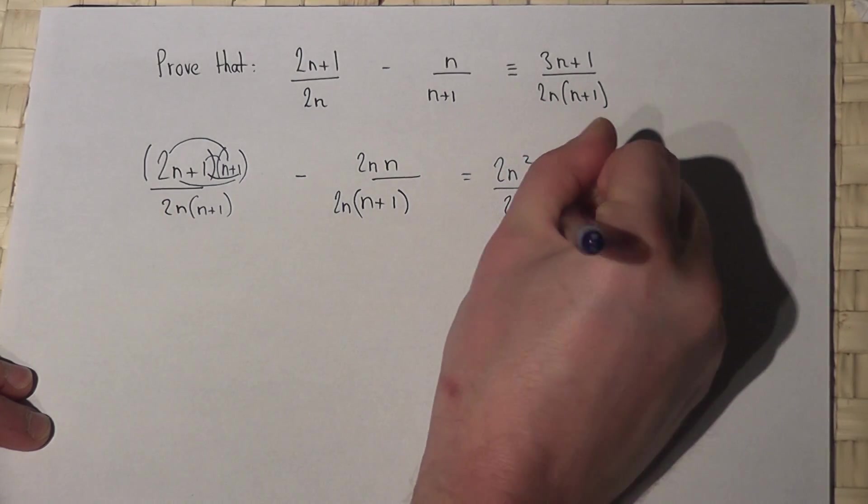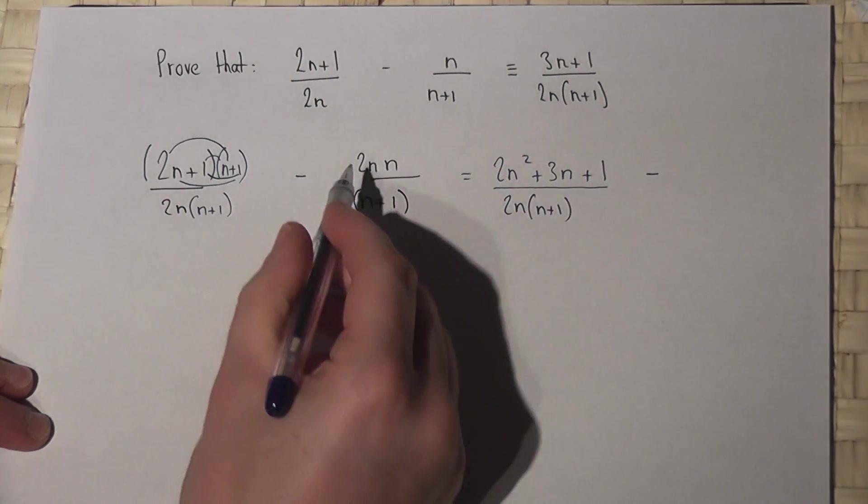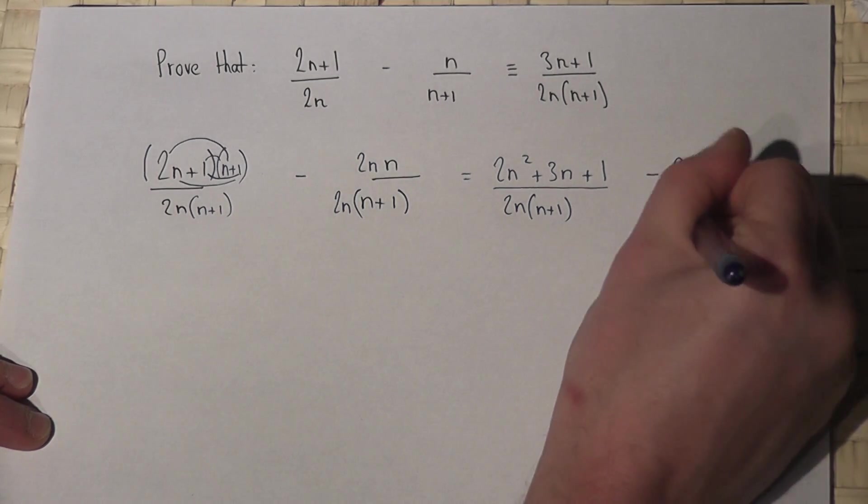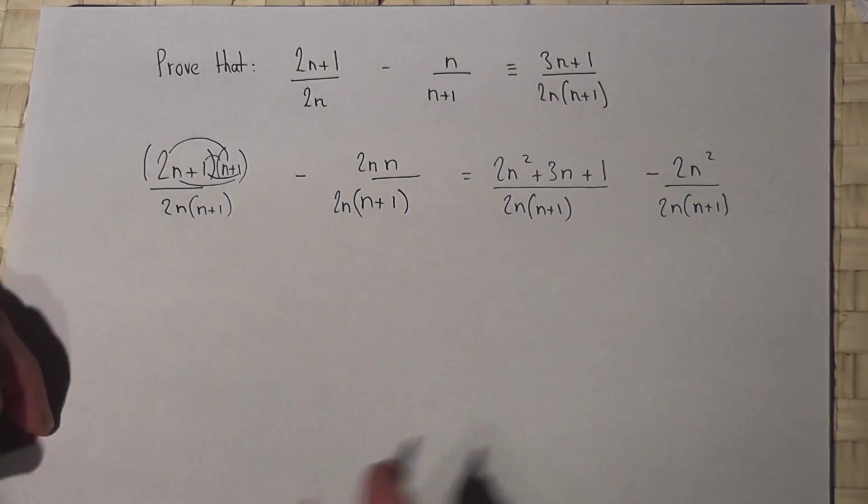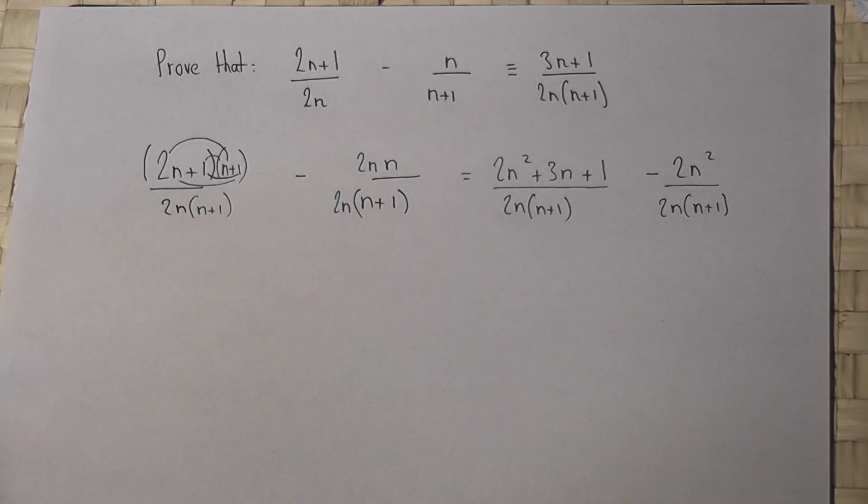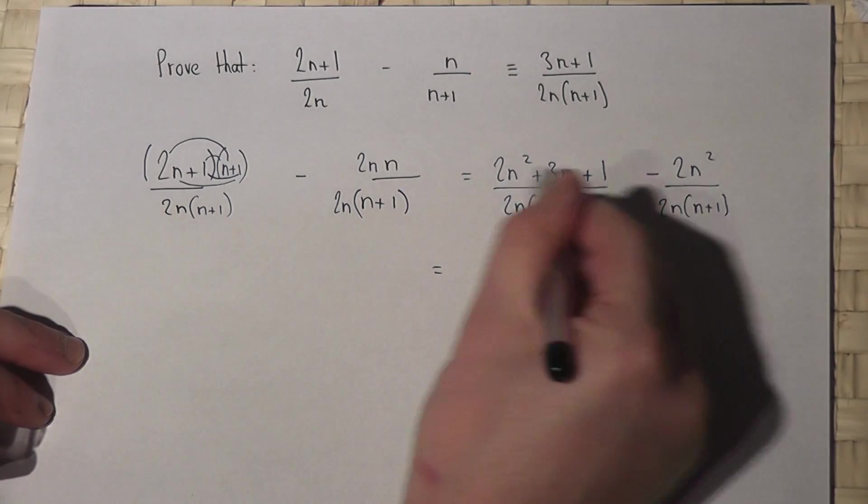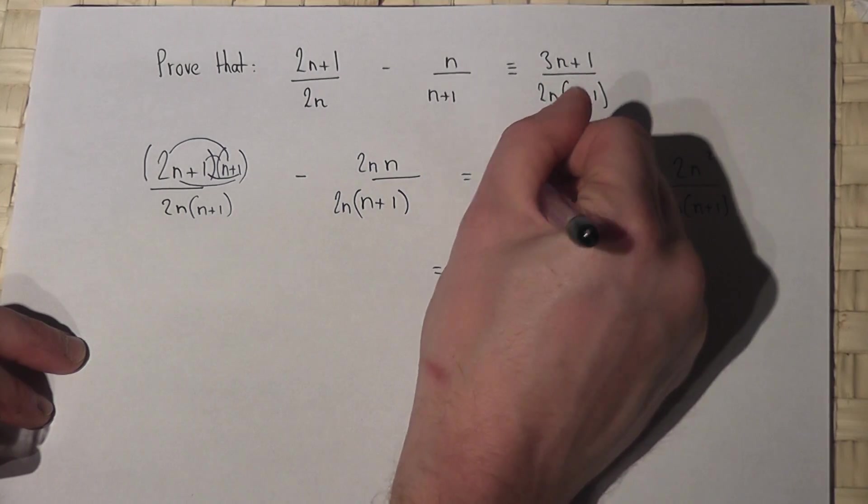Take away 2n times n, which is 2n², all over the same denominator. Because the fractions now share the same denominator, I can subtract them. So 2n² take away 2n² - they just cancel out.